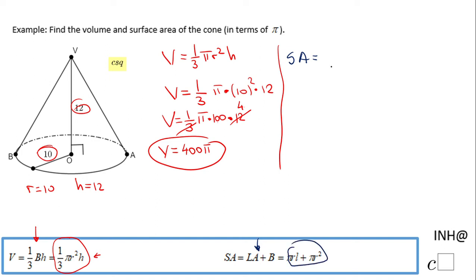also have this formula: pi r l, where this l is the slant height of the cone, plus pi r squared. The first part is the lateral area in case you need it, and the last part is the base.